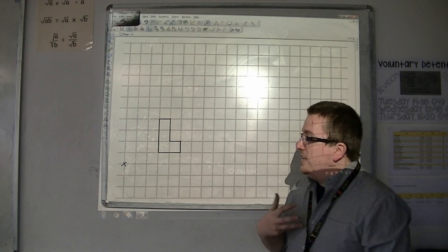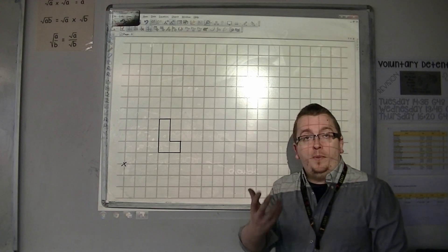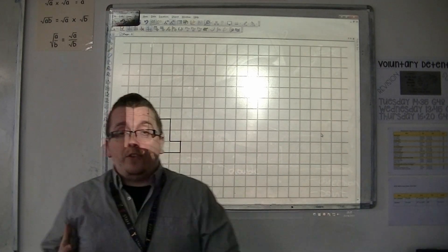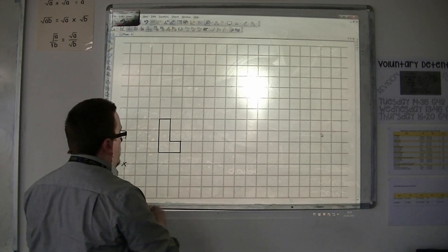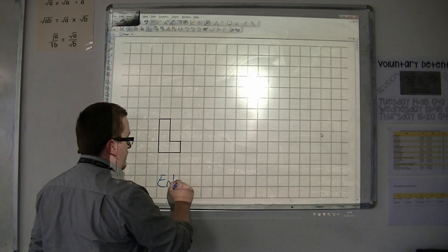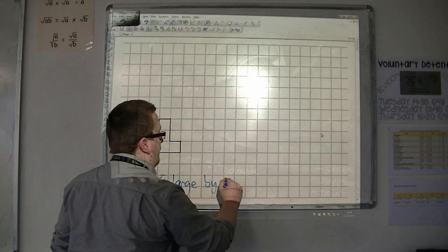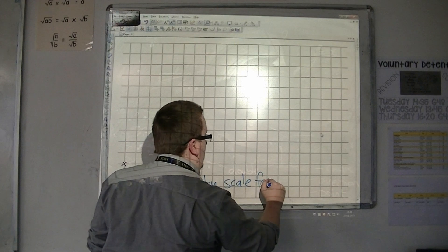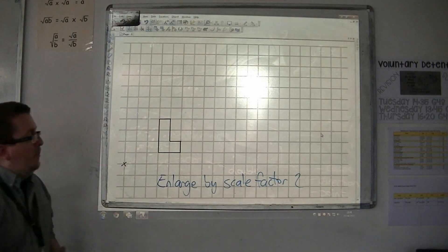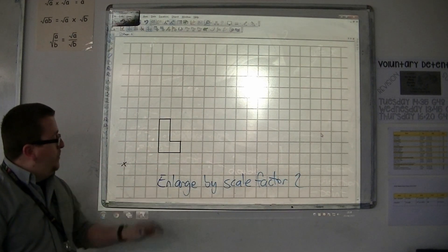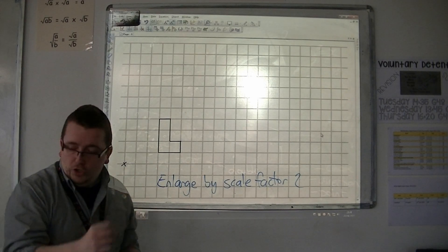Now, we need to determine where that place should be. So let's say I'm going to enlarge this shape by scale factor 2. So the same scale factor as I did in the previous video, but new shape and now centre of enlargement.